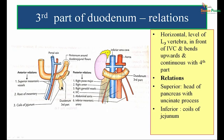Superiorly, the third part is related to the head of the pancreas with its uncinate process. Inferiorly, it is related to coils of jejunum.